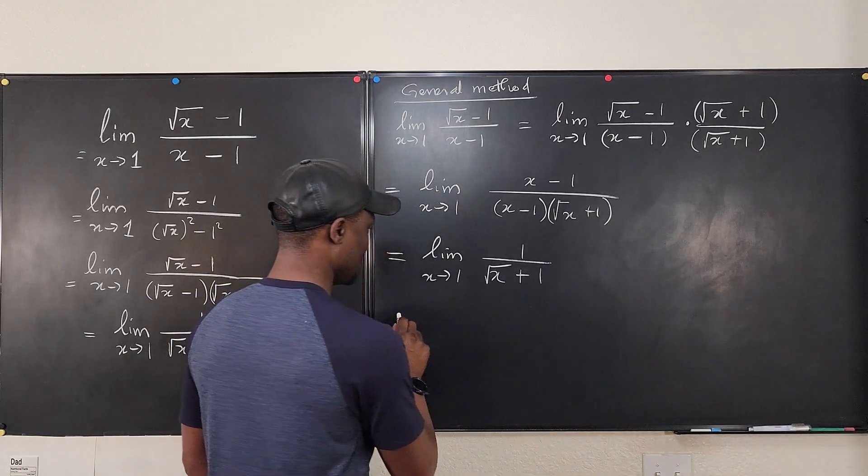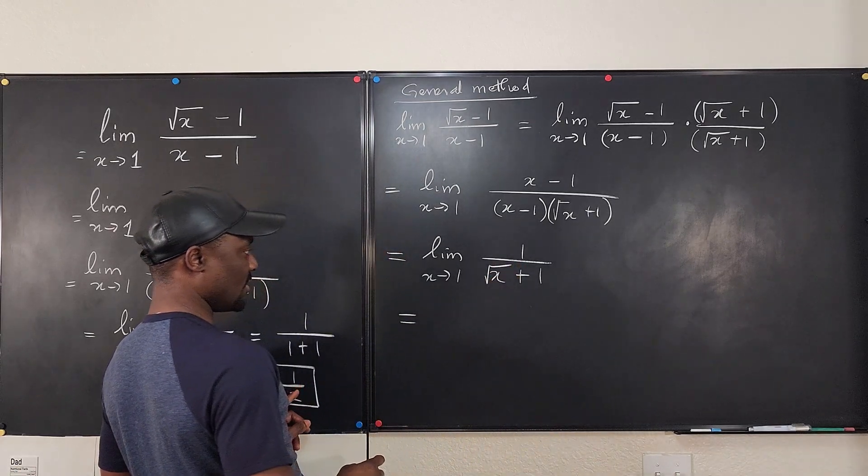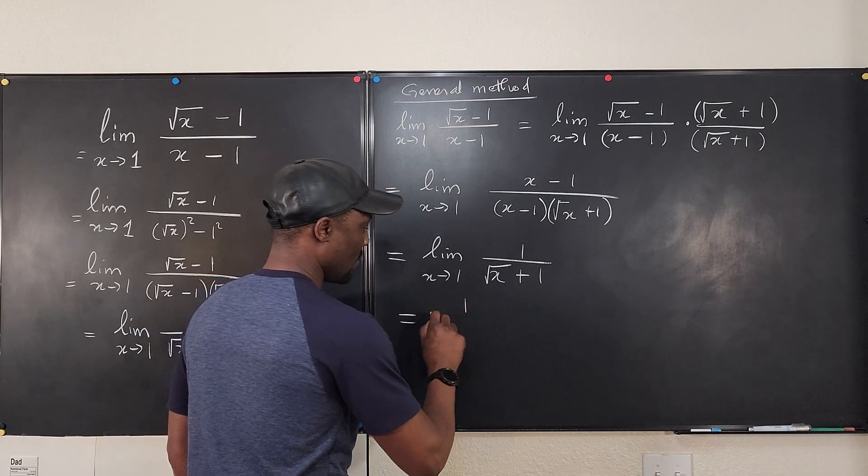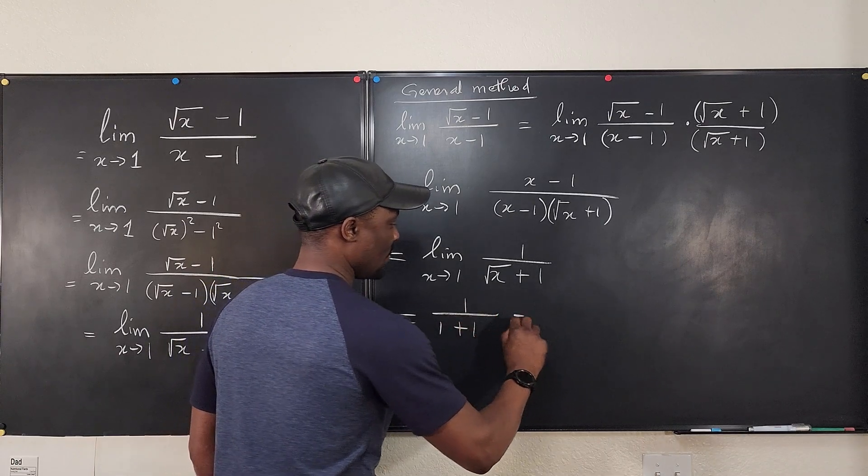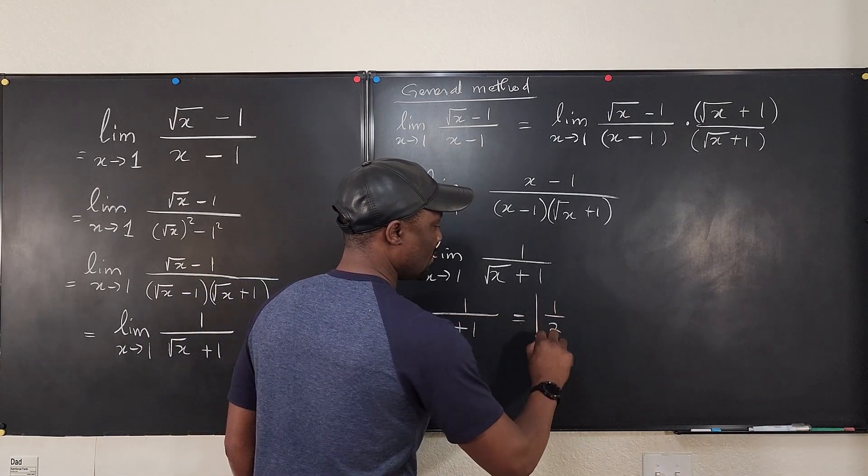And what do we get? Well, our answer is going to be equal to, you plug in 1, the same answer as you got here, it's going to be 1 over 1 plus 1, which is equal to 1 over 2.